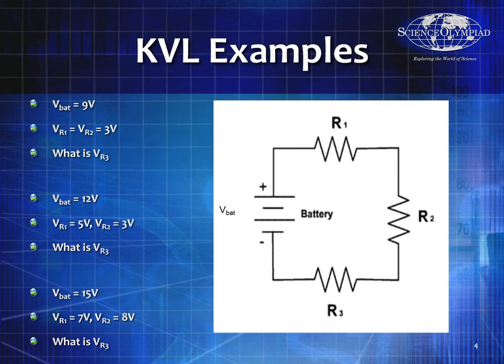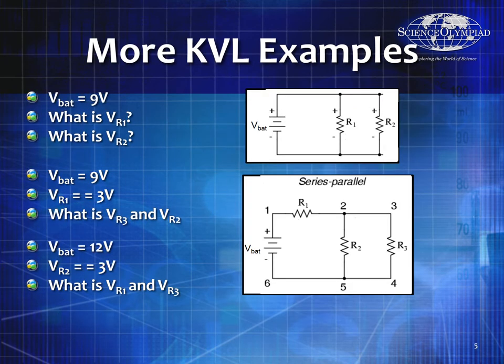Now let's look at the case where V_battery = 15 volts, V_R1 = 7 volts, and V_R2 = 8 volts. What is V_R3? It's 0 volts, because 15 = 7 + 8 + V_R3; subtract 15 from both sides and V_R3 = 0 volts. That could happen very easily if the resistance of R3 is zero.